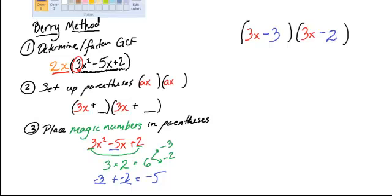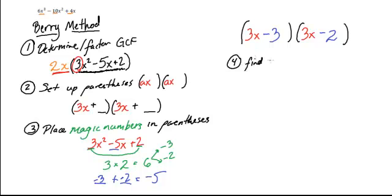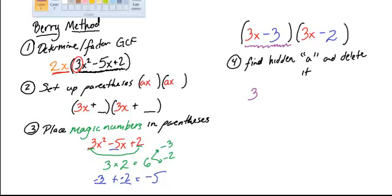All right. Last step. The last step. Now we knew right out of the gate that there was an extra A. So all we have to do is find the hidden A and delete it. What am I talking about? All right. So basically, I look at both of these trinomials and I look for a 3 in there. And then I factor it out and get rid of it. Well, this guy right there looks like has that 3. So I pop the 3 out.